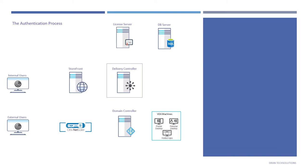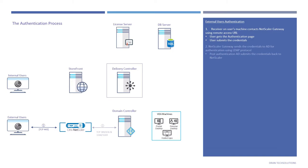The first phase is authentication. Let's begin with external users. The Receiver on the user's machine contacts the NetScaler Gateway using the remote access URL. The user gets the authentication page, submits their credentials, and NetScaler Gateway sends those credentials to the Active Directory domain controller for authentication using LDAP protocol. Post authentication, AD sends the result back to NetScaler, and NetScaler Gateway forwards the credentials to StoreFront. The user is then logged into the store. That's the external users' authentication process.